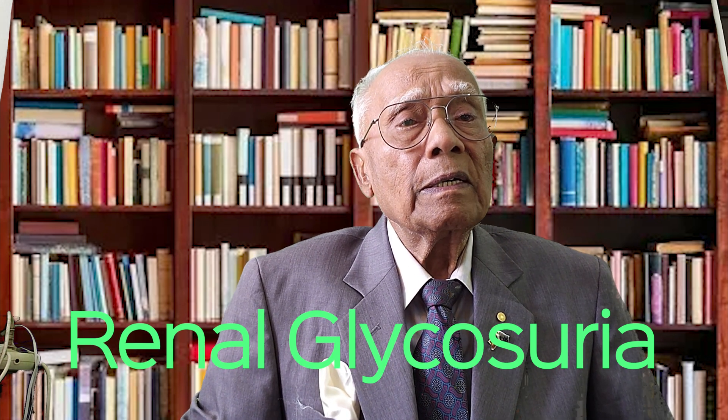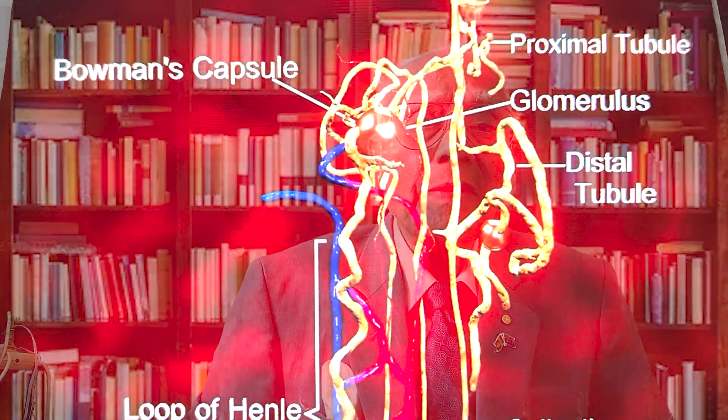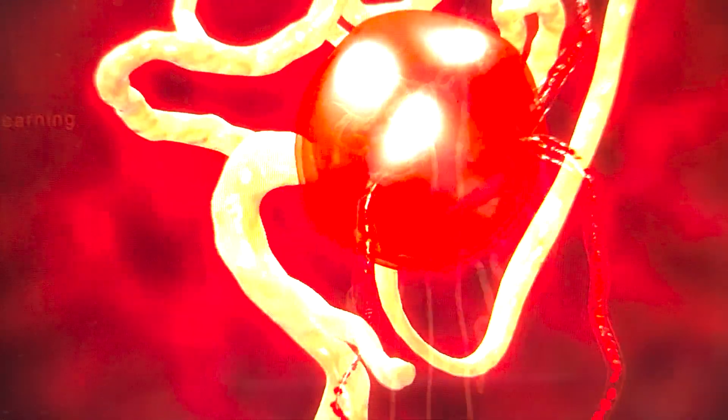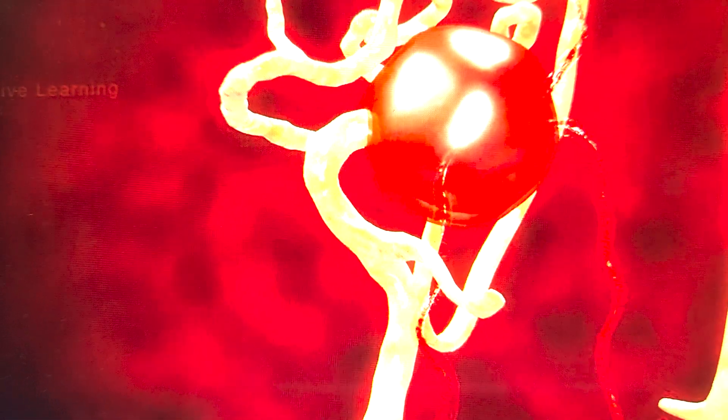Now, let's talk about renal glycosuria. Renal glycosuria is a rare, inherited condition where your body eliminates sugar in your urine even though your blood levels are normal. In this condition, you don't have too much glucose but your body gets rid of it anyway. It is caused by gene changes that lead to defects in your kidney tubules where glucose is absorbed. Renal glycosuria usually doesn't have any symptoms and doesn't need treatment.